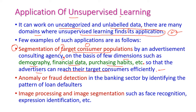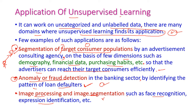The reachability will be very high. For example, if we promote a sport category movie only to youngsters, the reachability will be very high — so grouping of consumers is very important. The second application is anomaly or fraud detection in the banking sector, which is very helpful for bankers to provide loans to their consumers by identifying the pattern of loan defaults — people who properly pay their loans will get the next loan. The third one is image processing and image segmentation, such as face recognition, expression identification, etc.